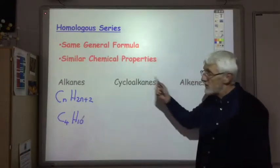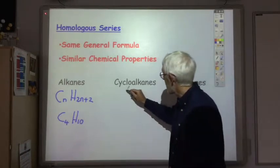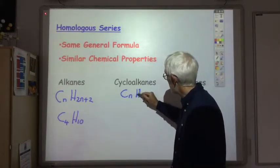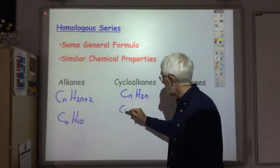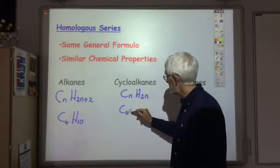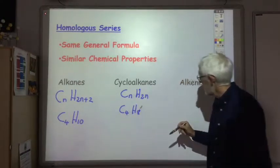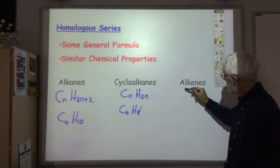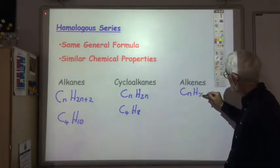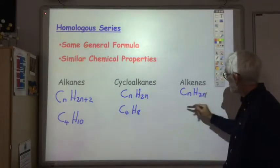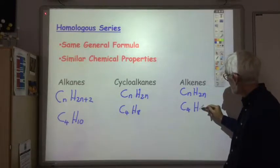The general formula for the cycloalkanes is CnH2n. So if you had four carbons, you'd have 8 hydrogens. And the general formula for the alkenes is also CnH2n, so again if you had four carbons, you'd have 8 hydrogens.